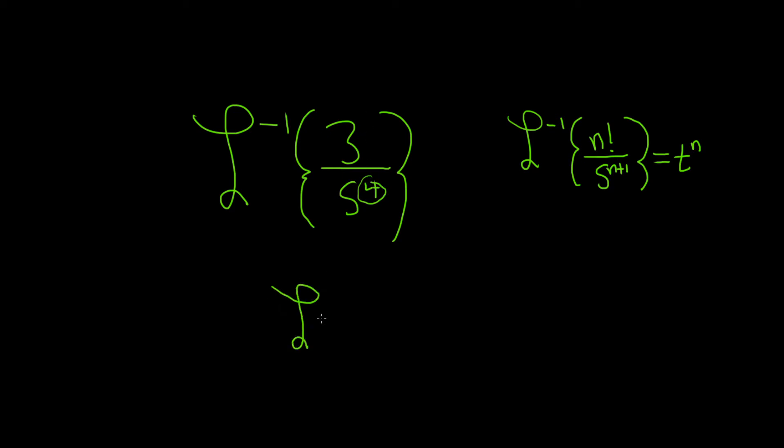So what we'll do is we'll rewrite the inverse Laplace transform. We'll pull out the 3, we'll have this s to the fourth still down here, and then we'll basically write down the 3 factorial that we need. So 3 factorial.